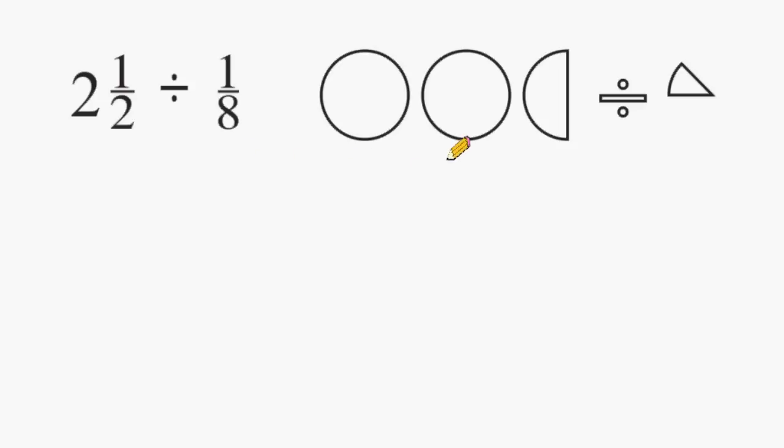Over to the right, we have 2 1⁄2 circles drawn divided by 1⁄8 of the circle. So what we are trying to do is to figure out how many groups of 1⁄8 can we fit inside 2 1⁄2.